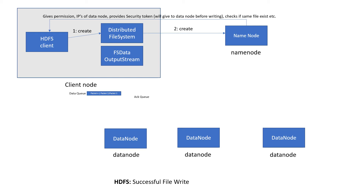Once all these validations are completed successfully, the client will initiate a connection with the FS data output stream. This output stream will talk to the data node and will create a data queue. The data queue will hold the packets that need to be written to the data node.